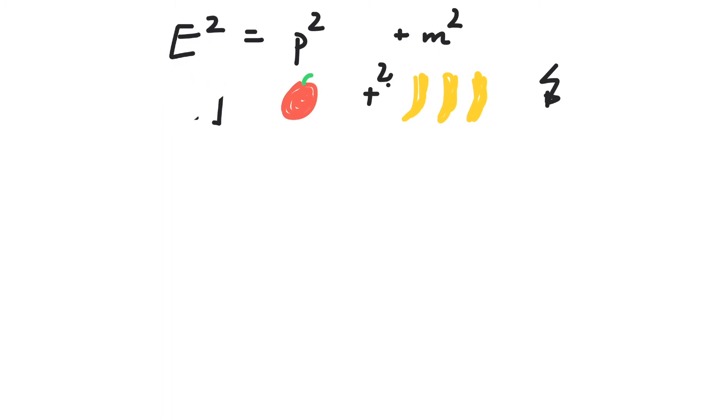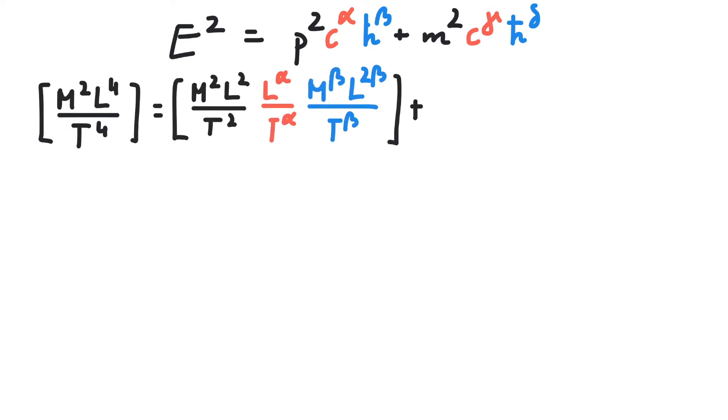The trick is to multiply all terms but one with a certain amount of c's and h-bars. Let's do this. We get E squared equals p squared c to the alpha, h-bar to the beta, plus m squared c to the gamma, h-bar to the delta. This yields an equation of units, like this.